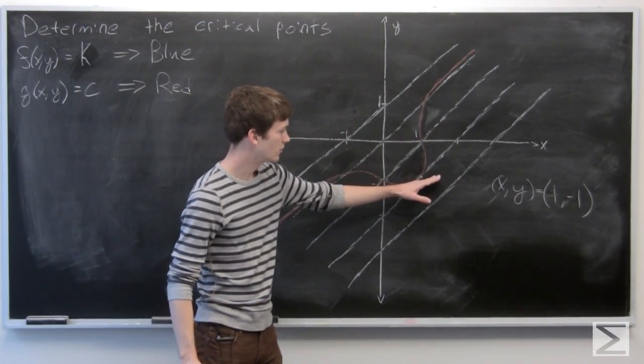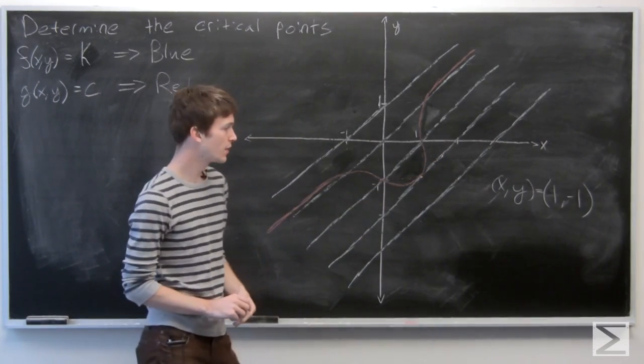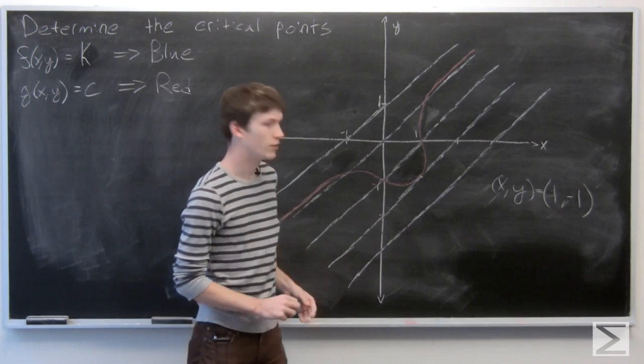So we see that it appears as though we have this blue line just barely touching this red line, and it occurs at the point (1, -1).